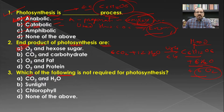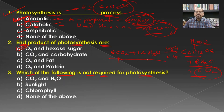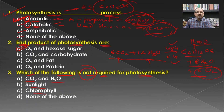The next question: which of the following is not required for photosynthesis? In the complete process of photosynthesis, there is need of carbon dioxide, water, light, and chlorophyll. So carbon dioxide, water, sunlight, and chlorophyll are all required. Since all options A, B, and C are required, none of the above will be the answer for this question.